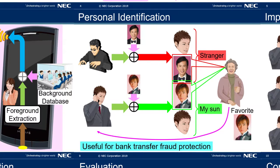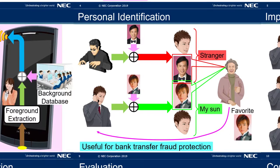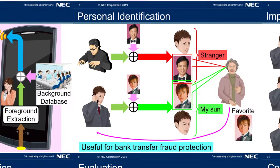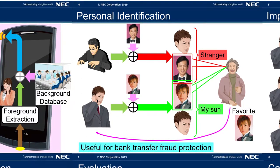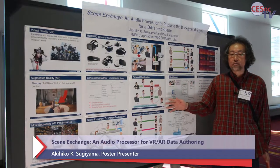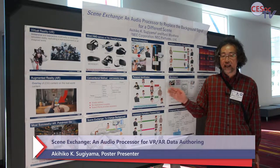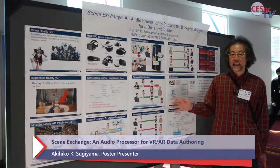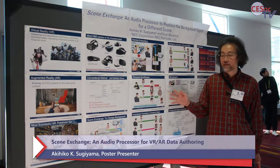When you send a signal, only you and the receiver know what kind of background signal is used, so the receiver can identify whether the speaker over the phone is actually you or somebody else, because somebody else does not know what the actual background signal is.